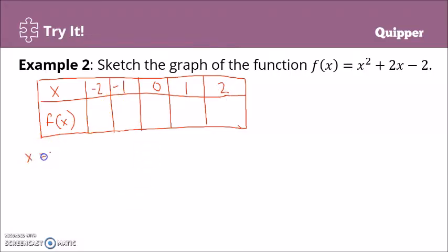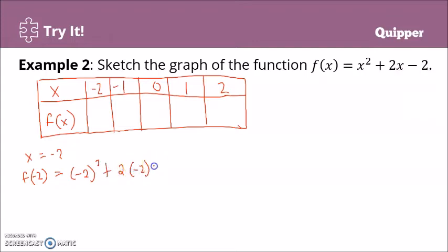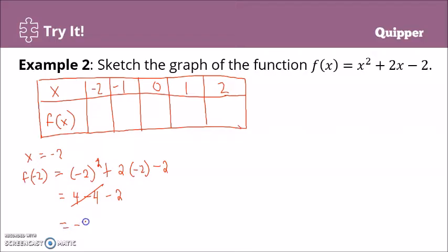When x equals negative 2, f(-2) = negative 2 squared plus 2 times negative 2 minus 2. Negative 2 squared is positive 4. 2 times negative 2 is negative 4. So we have 4 minus 4 minus 2, which is negative 2.